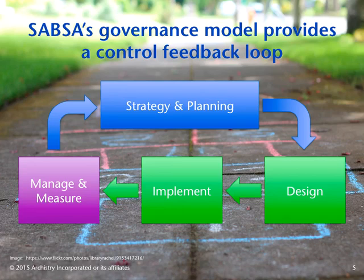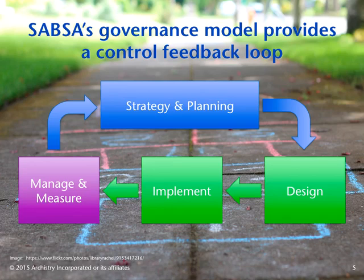The fourth phase of SABSA is the manage and measure phase. This phase monitors and collects the security performance information required to report the performance of the controls and managing uncertainty within the risk appetite of the organization. The information is aggregated and prepared according to the requirements of the recipients, previously established as part of the policy definition during the strategy and planning phase, and then communicated to the risk owners. Based on the actual performance of the controls and potential changes in the external threat and opportunity environment, the risk owners may wish to make changes to their policies or how those controls are implemented. If so, this triggers another iteration of the lifecycle in order to accommodate the desired changes.